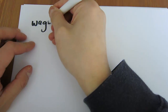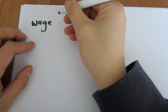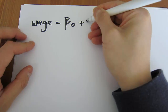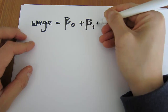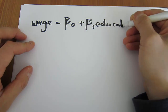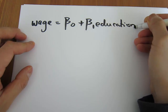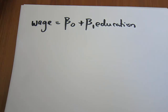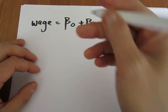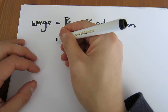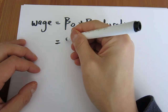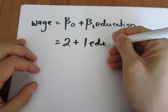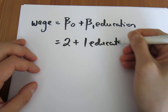This is a super common question. Given that you have a regression equation like so, how do we interpret the beta coefficients? Suppose we're given this regression and we run it in Excel, and Excel spits out the following regression coefficients.